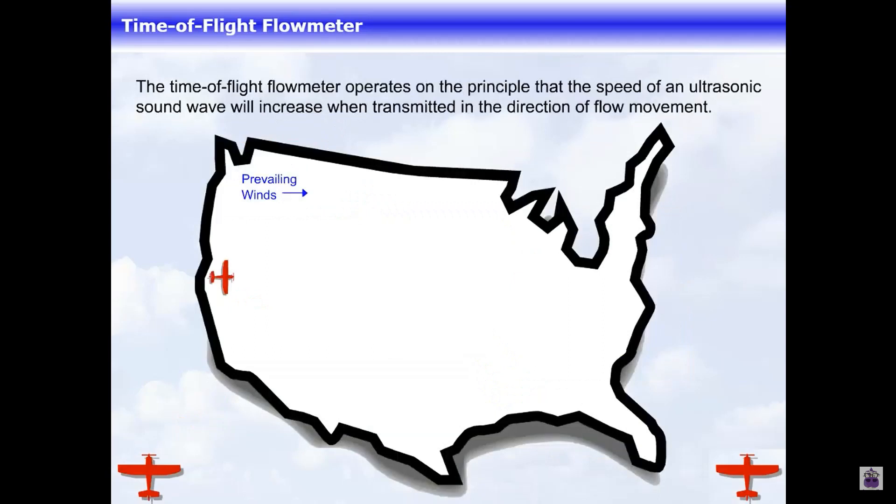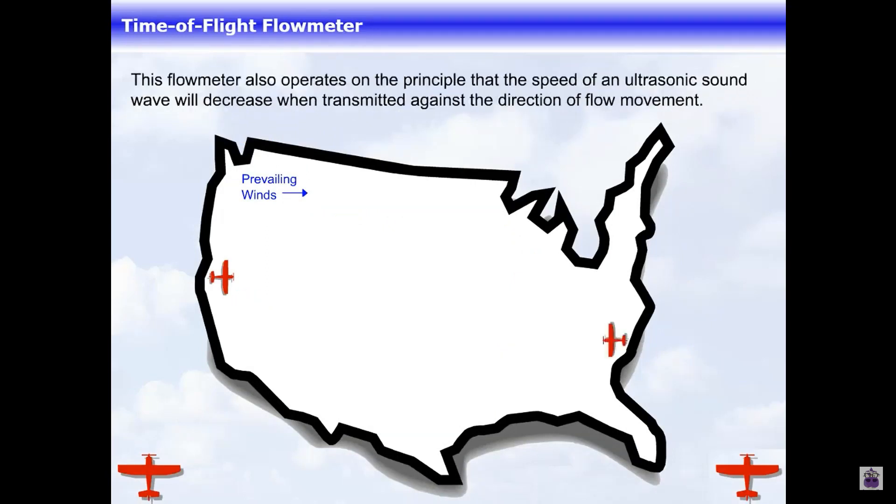This flow meter also operates on the principle that the speed of an ultrasonic sound wave will decrease when transmitted against the direction of flow movement.